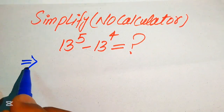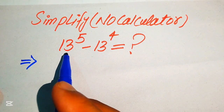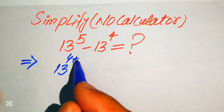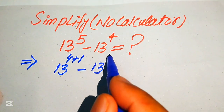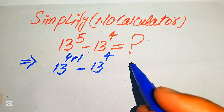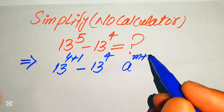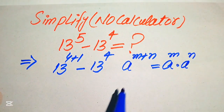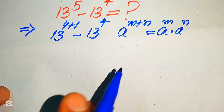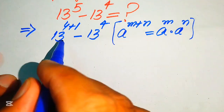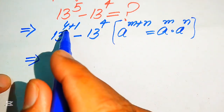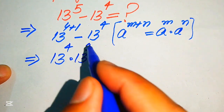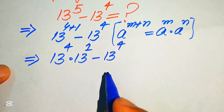The very first step is to focus on the exponent of the first term, which is 5. We break this 5 as 4 plus 1, giving us 13 to the power of 4 plus 1, minus 13 to the power of 4. Applying the exponent law — a^(m+n) = a^m × a^n — we expand to get 13⁴ × 13¹ minus 13⁴.